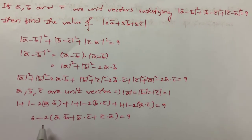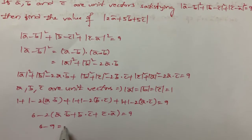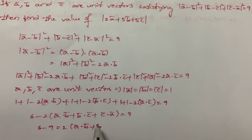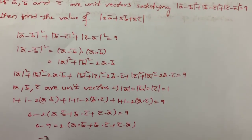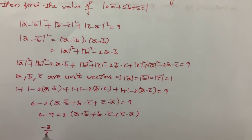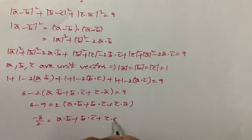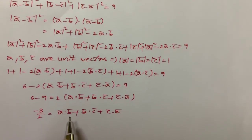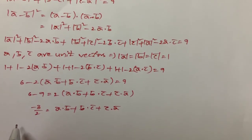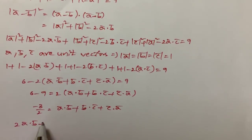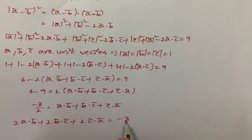Rearranging and bringing terms to the left-hand side: 6 - 9 = 2(a·b + b·c + c·a), so -3 = 2(a·b + b·c + c·a), which gives a·b + b·c + c·a = -3/2.